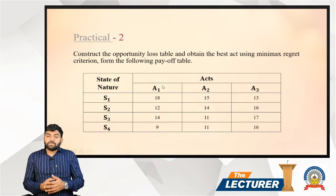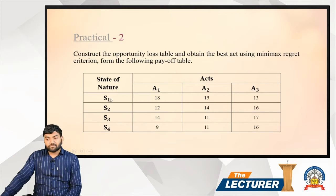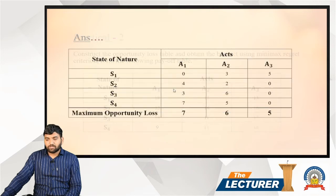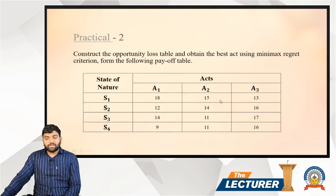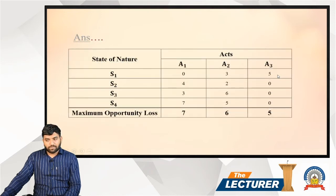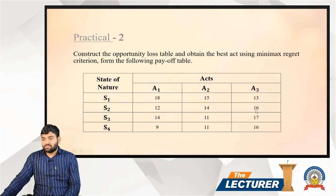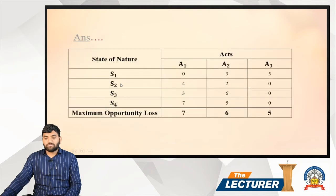For each state of nature, the opportunity loss equals the highest value in that state minus each act's value. For state S1: the highest value is 18; so losses are 0, 3, and 5 respectively. For state S2: a1 = 12, a2 = 14, a3 = 16; highest is 16; so losses are 16−12=4, 16−14=2, 16−16=0 — giving 4, 2, 0.